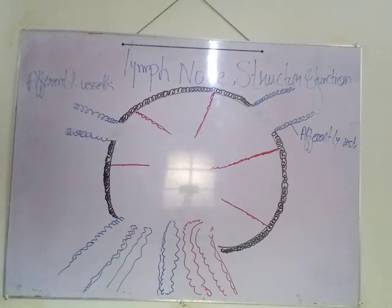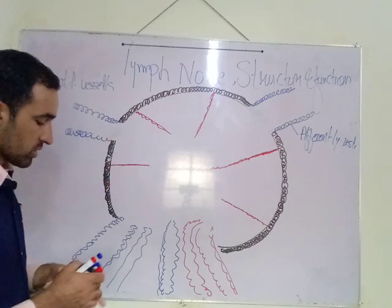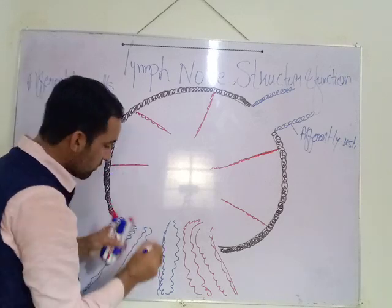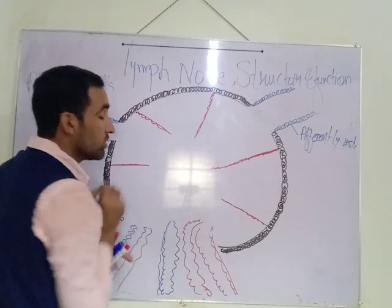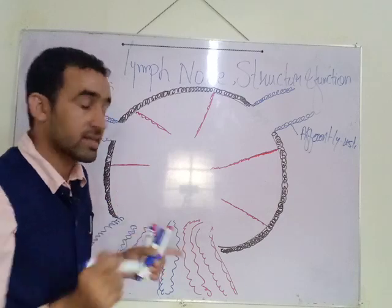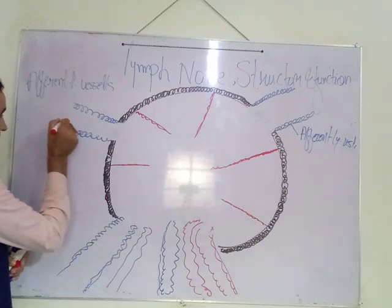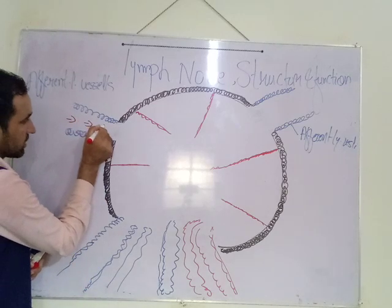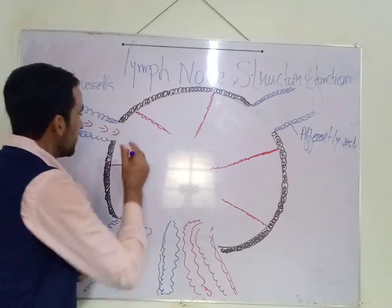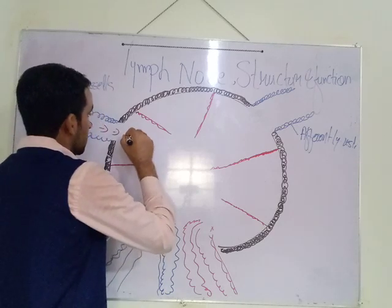So let's talk about the flow of lymph. Through afferent lymphatic vessels, the lymph fluid enters the lymph node. It moves downward toward the medulla of the lymph node through different lymphatic channels or lymphatic sinuses. For example, this is lymph fluid coming into the lymph node — first of all it enters into...